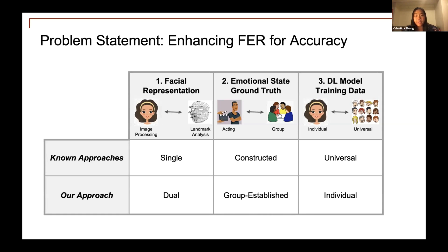In the case of facial representation, our FER system arbitrates between two facial representations instead of relying on just a single representation. Ground truth is an extremely challenging issue in FER. The best known approaches have been relying on professional actors, although recent studies have shown that facial expressions of trained actors are quite different from the rest of us. In this research, we propose using group behavioral contexts to automatically derive ground truth. Lastly, we experiment with a way to establish individualized data instead of relying on universal data. Putting all three improvements together, we will show some preliminary yet promising results.